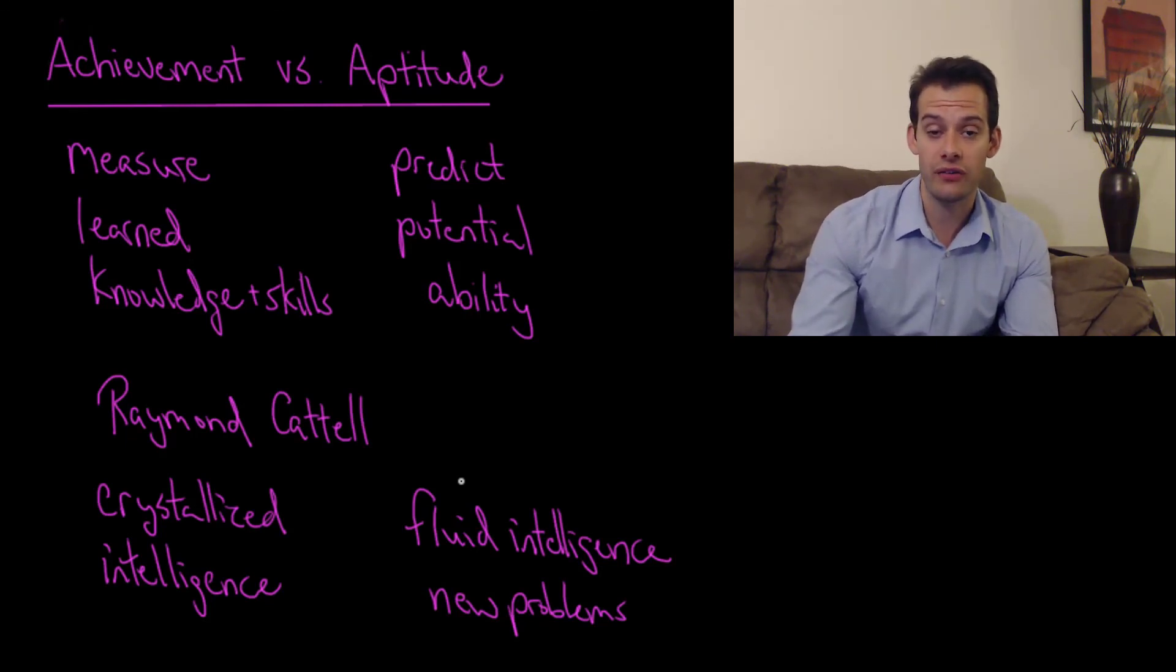Okay, so that's the distinction between crystallized and fluid intelligence and achievement and aptitude. And in the next video we'll start thinking about how we assess our assessments. And that means we're going to be talking about validity and reliability. We want to figure out have we made a good assessment or not. I hope you found this helpful. If so, please like the video and subscribe to the channel for more. Thanks for watching.